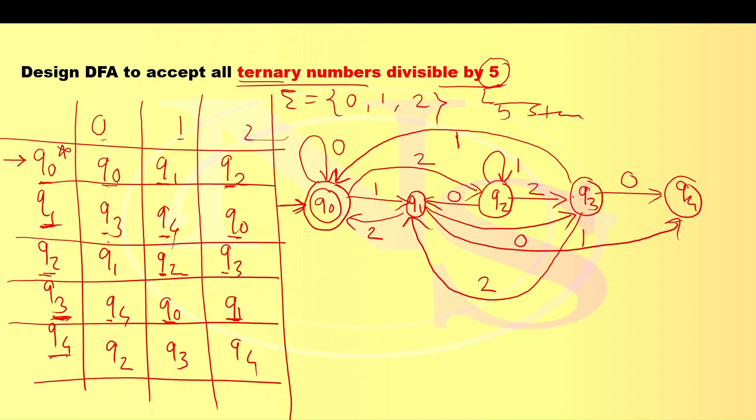Now last row. Q4 going to Q2 for symbol 0, then Q4 going to Q3 for which symbol? Symbol is 1. And at the last Q4 going to Q4, it's a self loop for symbol 2.